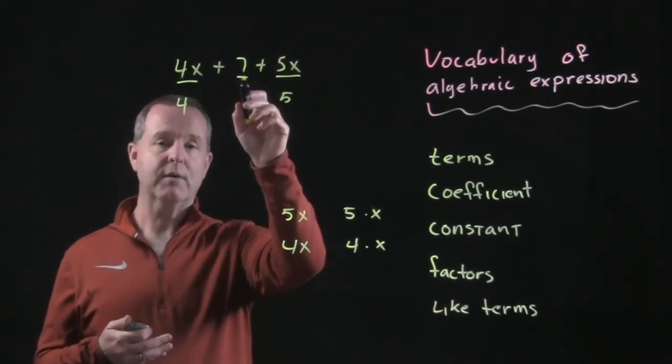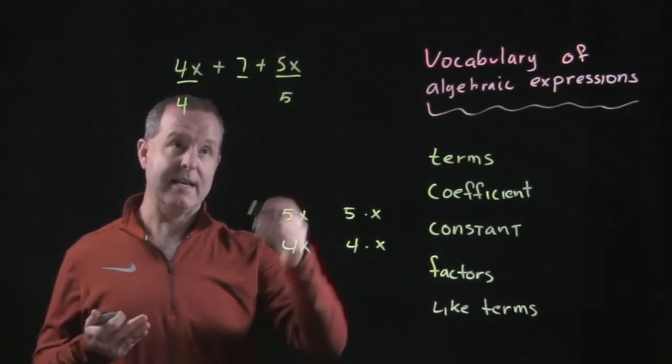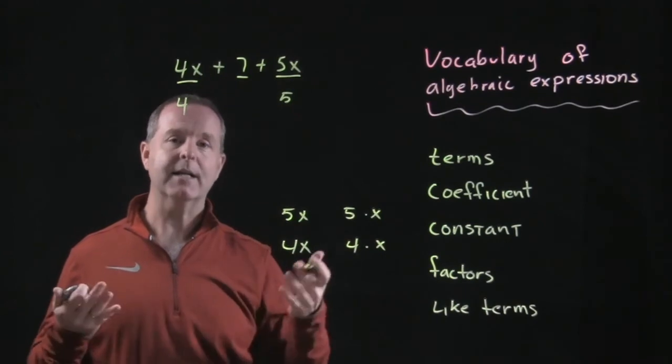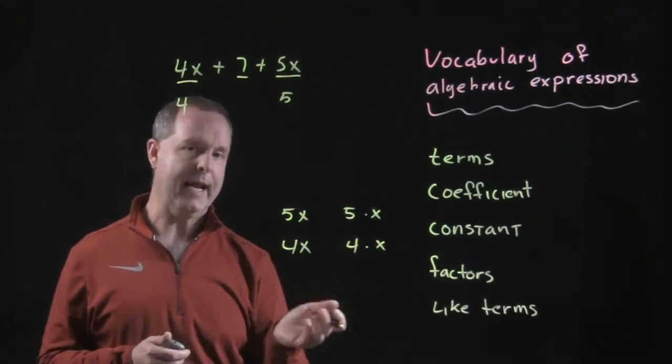Similarly, if there are additional constants in this equation—7 is my only constant—but if I had another constant by chance, I could combine those constants. Those constants would also be like terms.